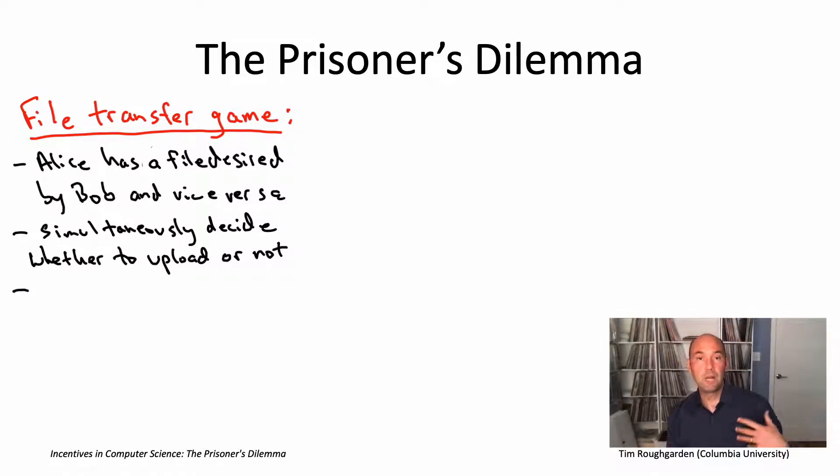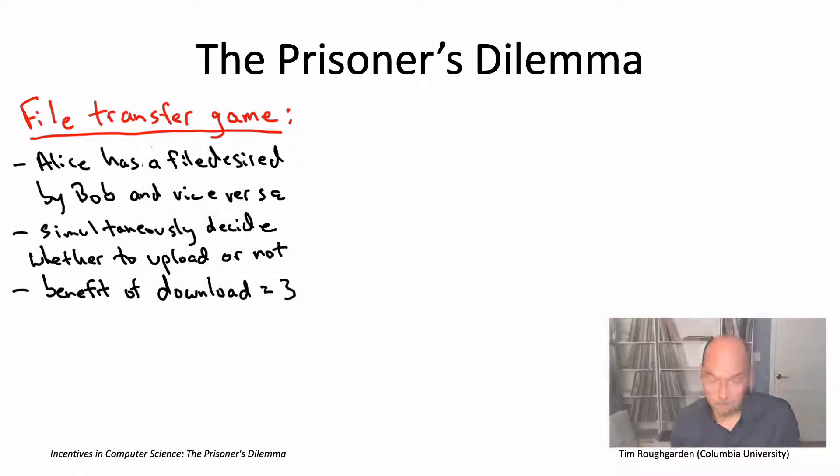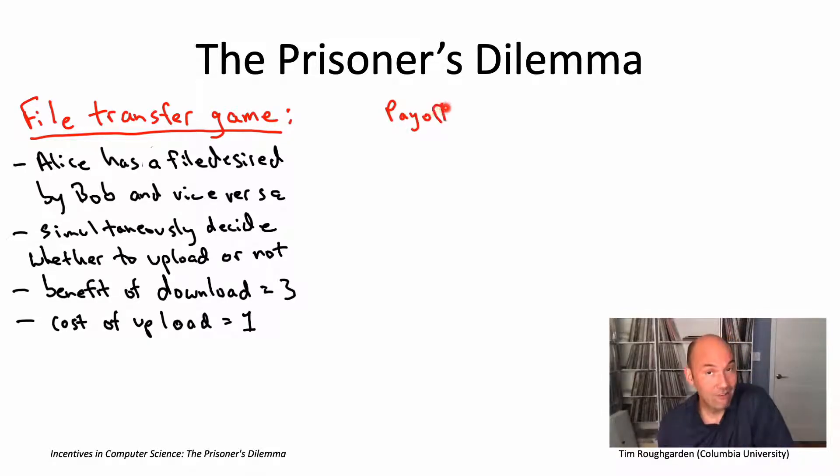Finally, we need to specify the player's payoffs. That is, how much they like or don't like the various outcomes that could occur. So first of all, the player wants the file they don't have. So let's assume they derive a benefit of three from acquiring the file from the other player. So that's something a player wants to see happen. Higher payoffs are better. So we'd love to get this benefit of three by downloading the file it wants from the other player. As far as its own decision about whether to upload its file or not, well uploading carries a cost, right? You have limited bandwidth, or maybe you pay for your bandwidth. So let's say the cost of performing an upload is one.